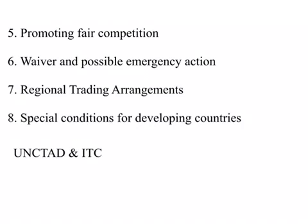Number six: GATT and WTO recognize that sometimes countries get into economic trouble or may face economic crisis, and it may be necessary to restrict foreign trade. GATT or WTO have clearly defined the conditions under which a waiver from the obligations of GATT or WTO is possible and emergency action can be undertaken. There is Article 25, whereby a country, when its economic or trade circumstances so warrant, may seek a derogation from a particular GATT obligation.